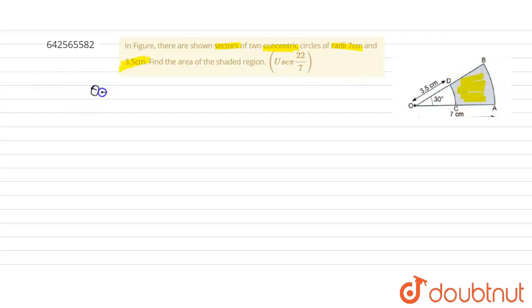So we have here theta equals 30 degrees. Basically, this shaded area equals area of this bigger sector minus area of this smaller sector.